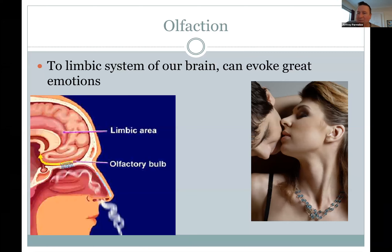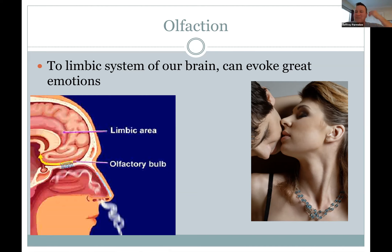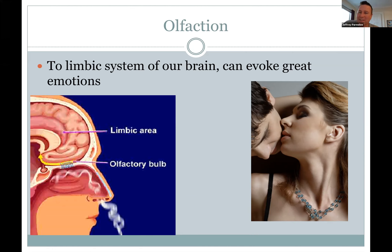I'll mention olfaction — smelling. You have olfactory receptor cells high up in your nasal cavity. When you breathe in, it refreshes the air so you can pick up scents. The olfactory nerve — cranial nerve number one — goes into your limbic system, which handles emotions and memory. So smells can really elicit emotions even before you can identify the smell.